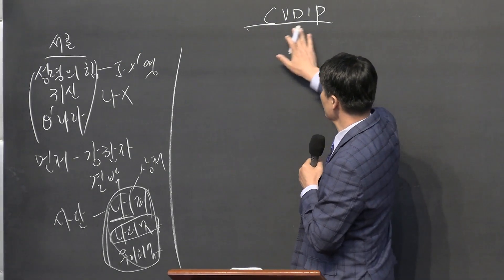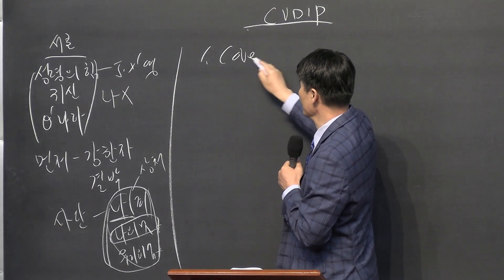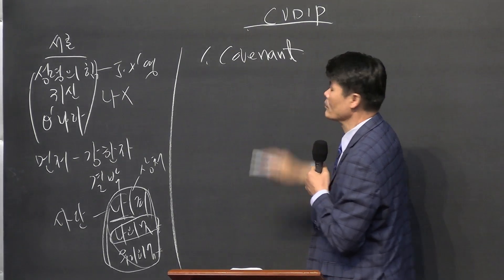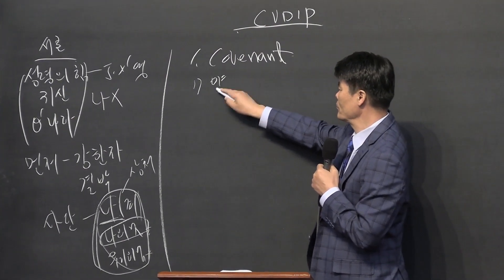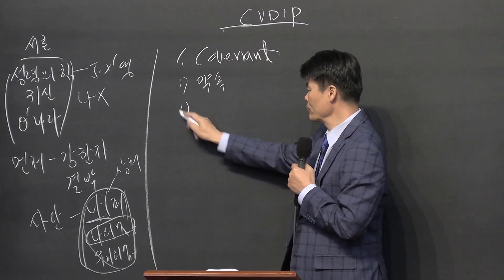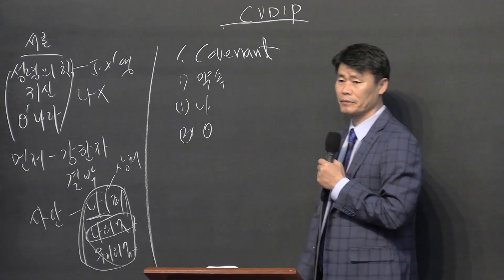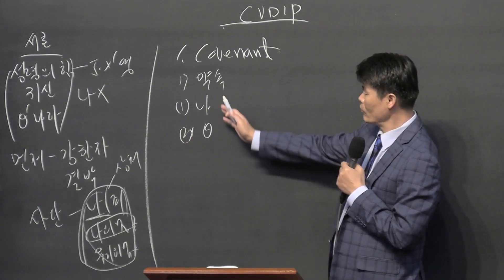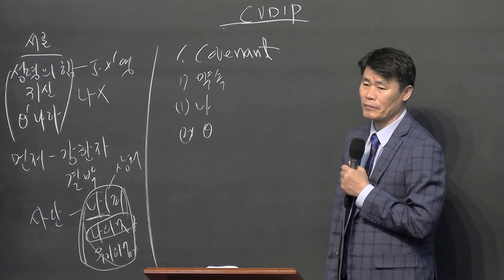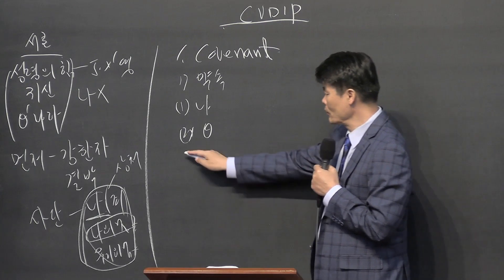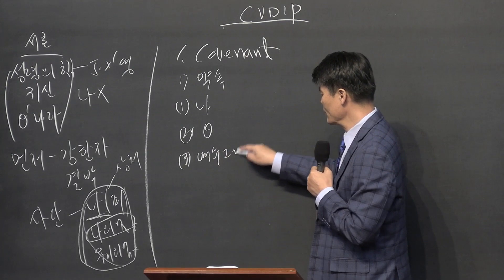Today our CVDIP, simply put, it's covenant. That's God's promise. Whose promise? It is the promise between God and I. It's not what I want, but what God wants for me. And the eternal promise is Jesus Christ.